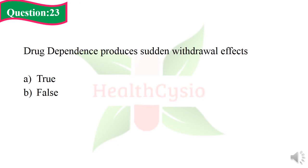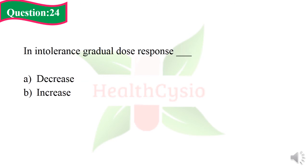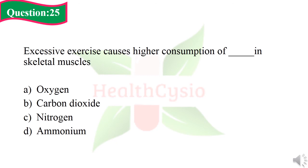Question 23: Drug dependence produces sudden withdrawal effects. Option A: the given statement is true. Option B: the given statement is false. The right answer is Option A, true. Question 24: In illness, gradual dose response will Option A: decrease. Option B: increase. The right answer is Option A, decrease. Question 25: Excessive exercise causes higher consumption of dash in skeletal muscles. Option A: oxygen. Option B: carbon dioxide. Option C: nitrogen. The right answer is oxygen.